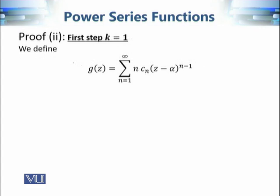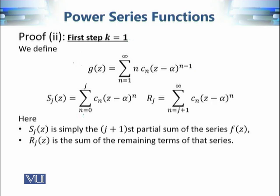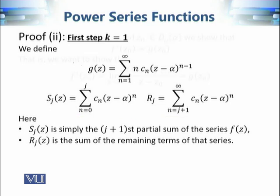Let's recall the basic terminologies introduced to prove the case k equal to 1. We defined g(z) to be the candidate derivative expression, since if f(z) is differentiable then g(z) will be its derivative. We also split f(z) into two parts: s_j(z), the first j plus 1 terms, and r_j(z), the remainder. So s_j is simply the (j+1)-th partial sum of the series f(z).